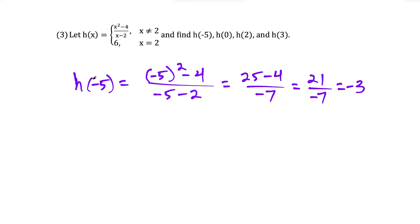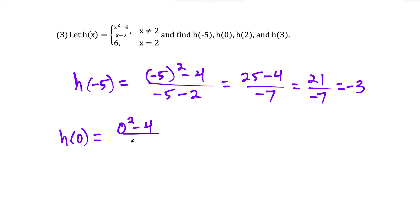For h of zero: zero is not equal to two, so we plug zero into the top row. Zero squared minus four over zero minus two gives us negative four over negative two, which equals positive two.